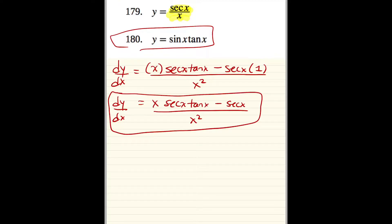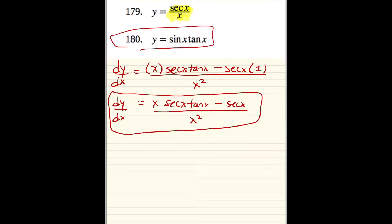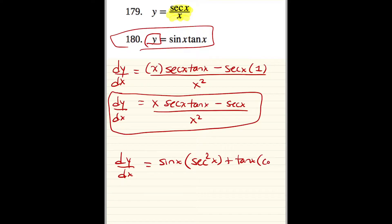Anytime you have a trig with a trig, see if you can reduce it first. Tangent always goes with secant, so check whether simplification helps. For number 180, don't forget to take the derivative of y first. Then apply the product rule: keep the first, derivative of the second, plus keep the second, derivative of the first. In this case there's nothing further to simplify, so that's your answer.